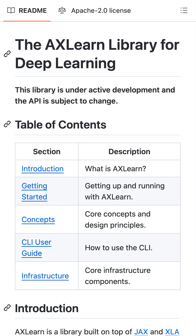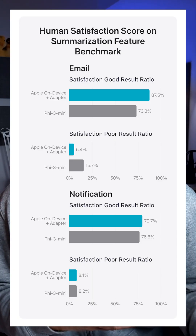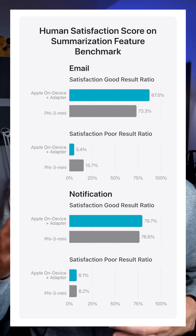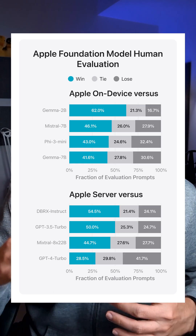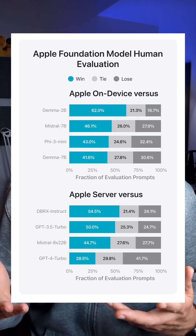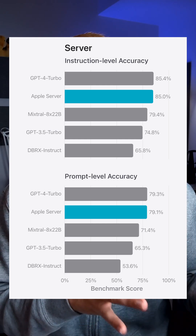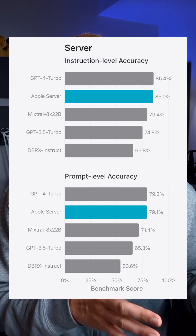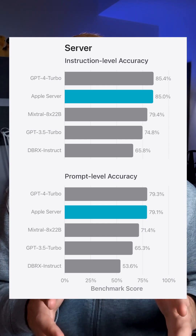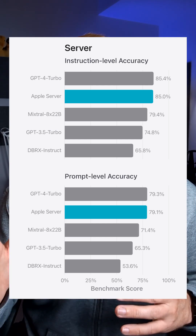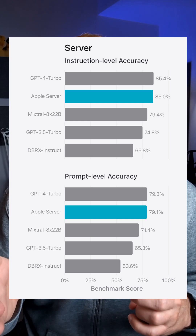All of these models are created using Apple's AX Learn framework that they open-sourced in December 2023. And based on Apple's own published benchmark testing, they perform on-par or slightly above comparable models. It's worth noting they're comparing the large language model to GPT-3.5 Turbo and GPT-4 Turbo, and GPT-4 Turbo actually performs better than their model.